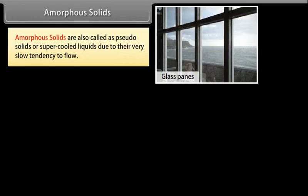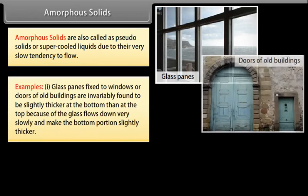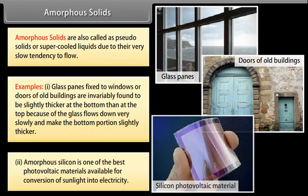Amorphous solids are also called as pseudo solids or super cooled liquids due to their very slow tendency to flow. Example: Glass panes fixed to windows or doors of old buildings are invariably found to be slightly thicker at the bottom than at the top because the glass flows down very slowly and makes the bottom portion slightly thicker. Amorphous silicon is one of the best photovoltaic materials available for conversion of sunlight into electricity.